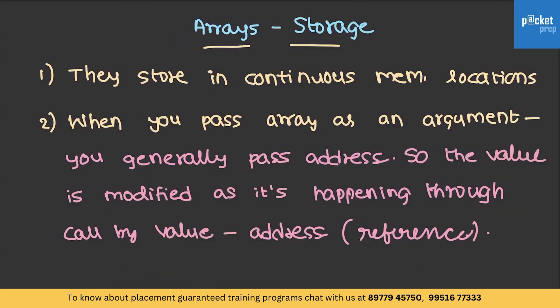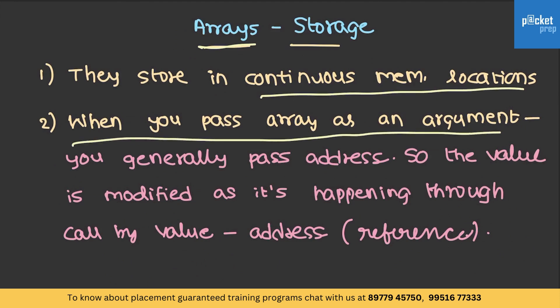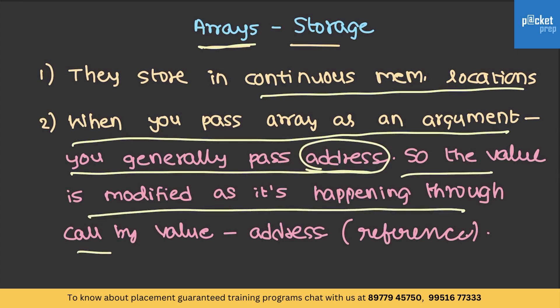Let's understand one point very clearly: arrays are stored in contiguous memory locations, and when you pass an array as an argument, you are generally passing its address, because the array name is a mnemonic that stores its address. So the value is modified — it happens through call by value, but the value here is the address, which is why many people call it call by reference. When you try to pass an array as an argument in any program, the array will actually be modified even if you pass it as a local argument.